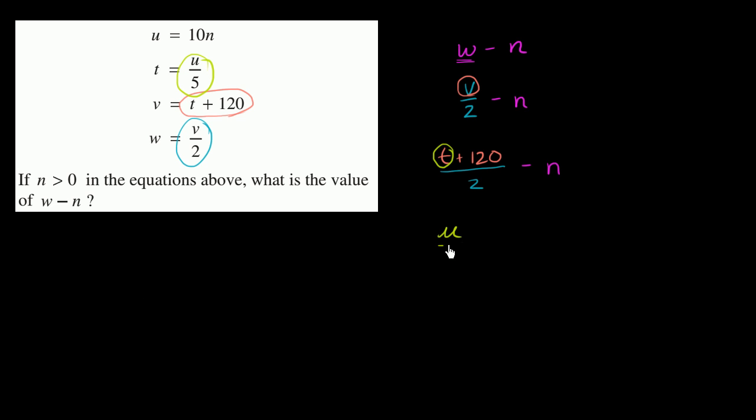So we get u over 5 plus 120, plus 120 over 2. I'll simplify this at the end. Over 2 minus n. And then finally they tell us that u, u is equal to 10n.